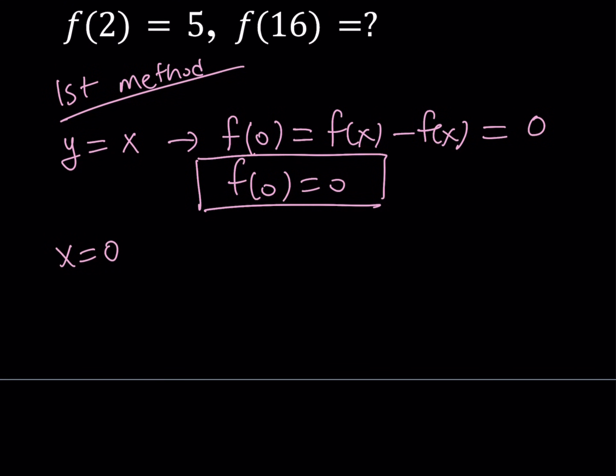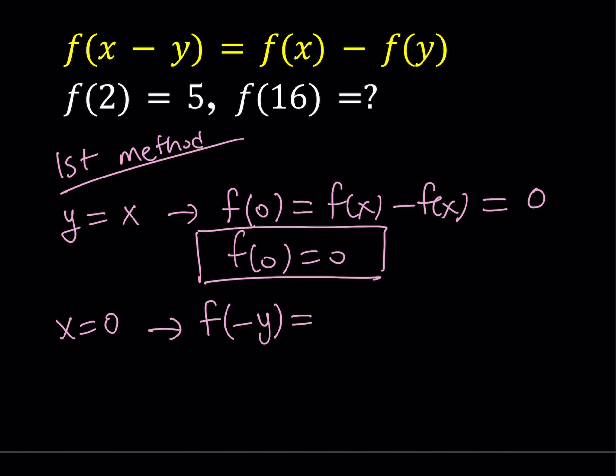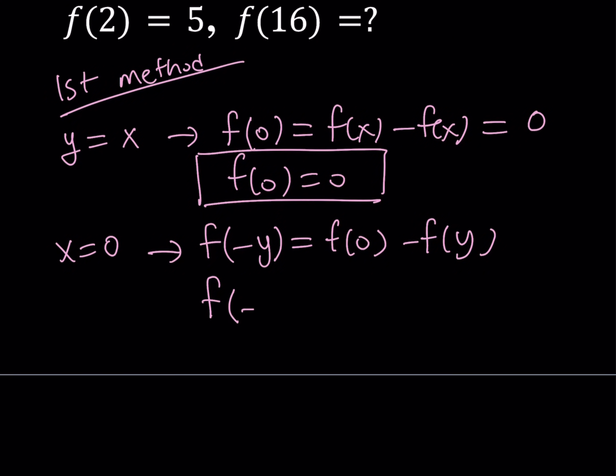We're going to look for more values. How about replacing x with 0, but doing nothing for y? If you replace x with 0, you're going to get f(-y). On the right-hand side, you're going to get f(0) - f(y). Notice that we know from the previous step that f(0) = 0. So this gives us f(-y) = -f(y). This is an important result, and this is true for all real values of y. If this is a true statement for all y values, then this means that f is an odd function.